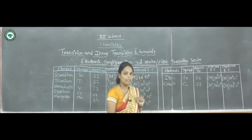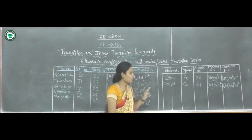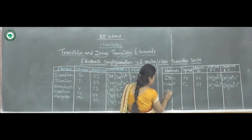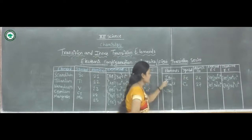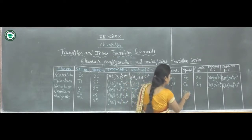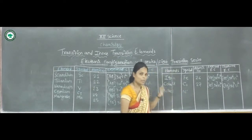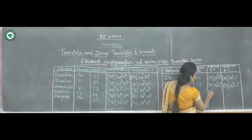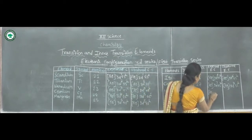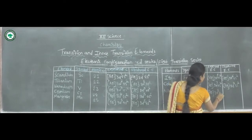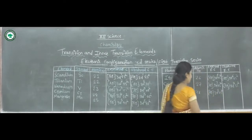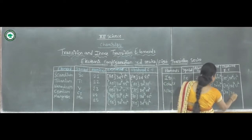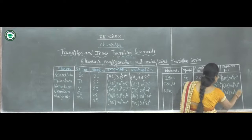The next element is Nickel, symbol Ni, atomic number 28. The expected electronic configuration is [Ar] 3d⁸ 4s². The observed electronic configuration is the same: [Ar] 3d⁸ 4s².